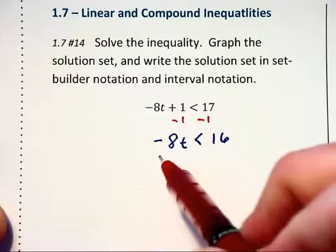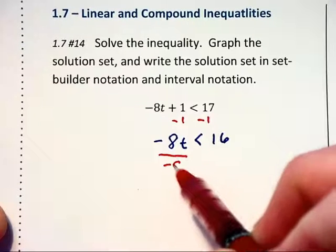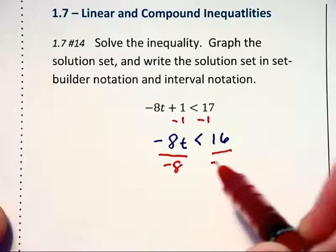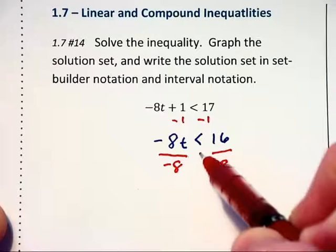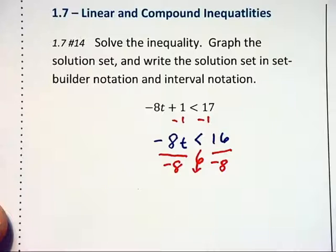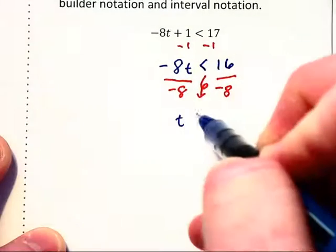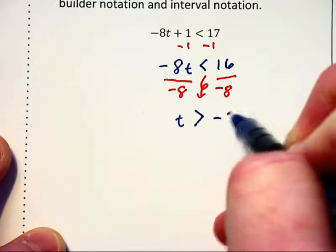Whenever we multiply or divide each side of an inequality by a negative number, and in this case we're dividing by negative 8, we need to change the direction of the inequality. Here we are going to get t is now greater than negative 2.